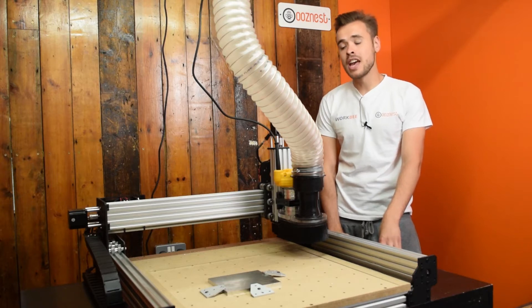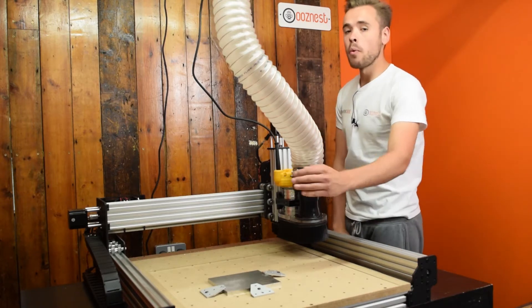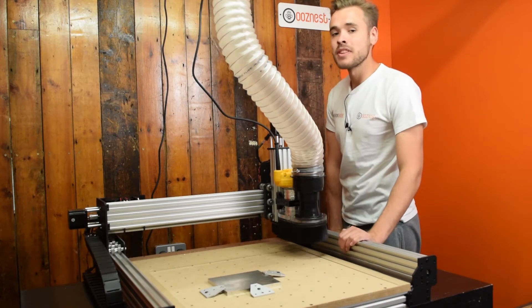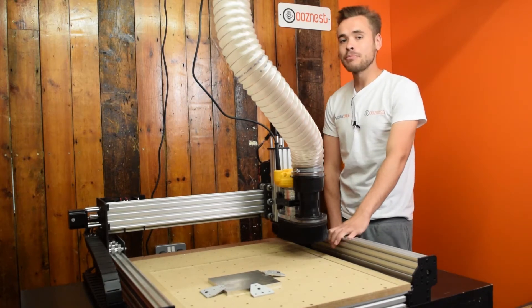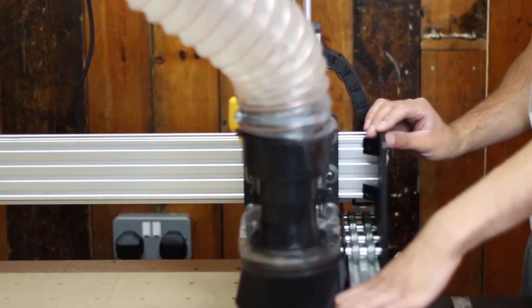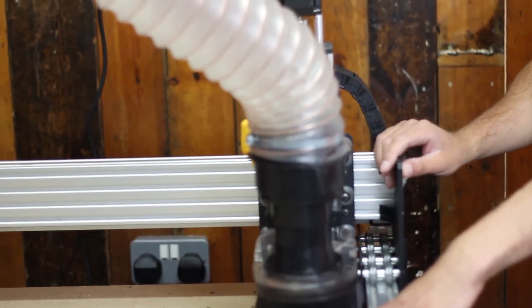So the first thing we need to do is set up the two Y-axis actuators so they're in sync with each other. With a screwdriver they're mechanically held in place so when you first build the machine these two may not be in line with each other.